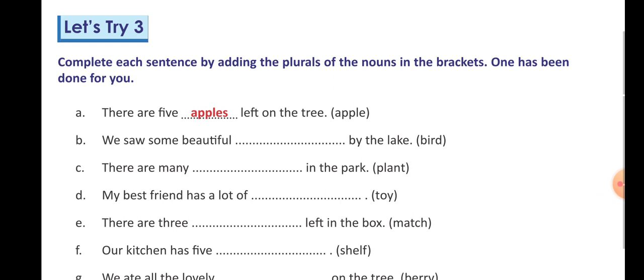E number: there are three matches left in the box, M-A-T-C-H-E-S. Our kitchen has five shelves, S-H-E-L-V-E-S. In the end here is F, and we remove F when we make it plural. We remove F and add V-E-S, so we will write here S-H-E-L-V-E-S.